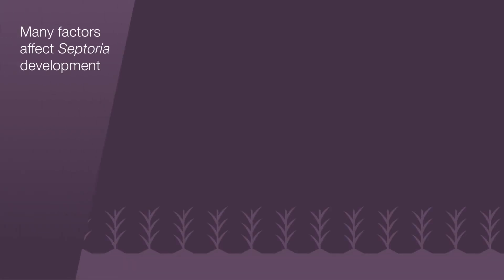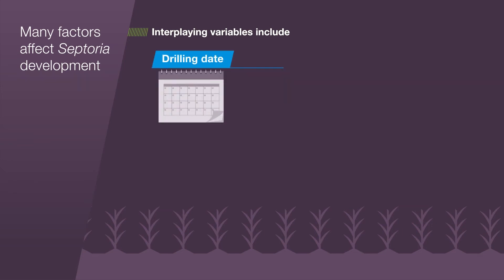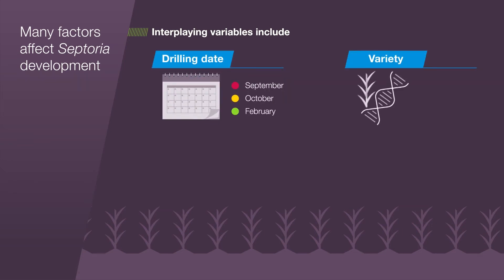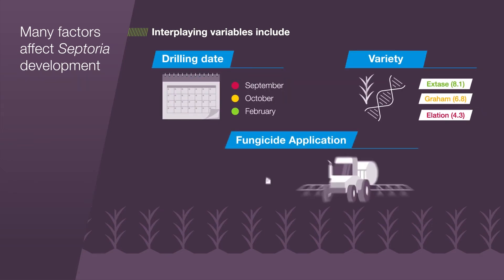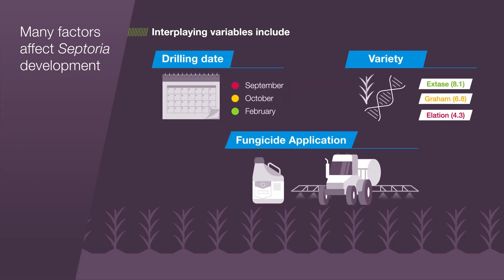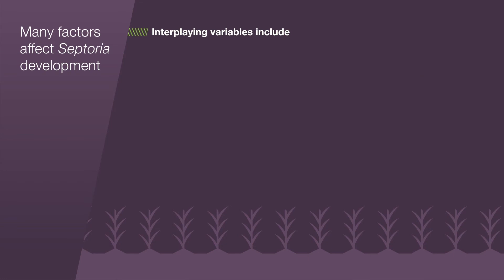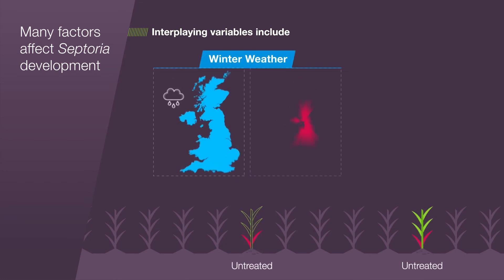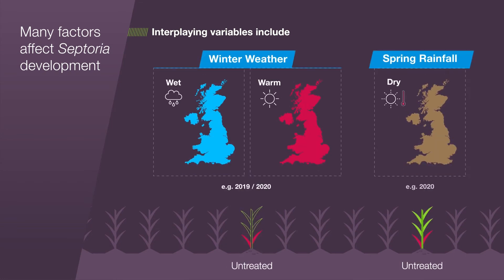Septoria management is further complicated by many interplaying variables which influence the disease development. These include factors that we can influence, including drilling date, variety choice and fungicide application, and also factors out of our control, including winter weather and spring rainfall.